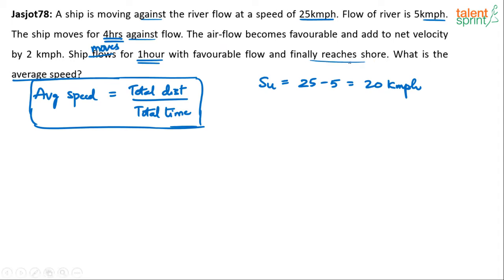Now the important point to note is how the speed is changing. Upstream speed is 20. After that the air flow becomes favorable and adds to the net velocity by 2 km per hour. When the flow became favorable, before the flow was favorable, the ship was moving at what speed? 20 km per hour.